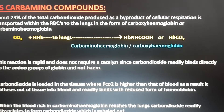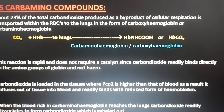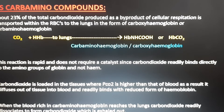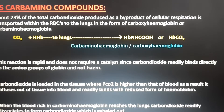The second type is as carbamino compounds. About 23 percent of the total carbon dioxide produced as a byproduct of cellular respiration is transported within the RBCs to the lungs in the form of carboxyhemoglobin or carbaminohemoglobin.